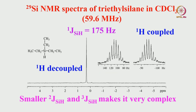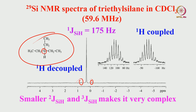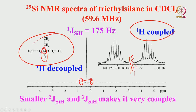Now we look at another simple organic silicon molecule. Again, two types of experiments are done: proton-decoupled and proton-coupled. When proton-decoupled, you see a single peak — only one silicon is present, giving a singlet. You also get two satellites from silicon-carbon one-bond coupling. There is also the proton-coupled spectrum, where one-bond silicon-proton coupling is present and is quite large. This will split the silicon peak into a doublet of the order of 175 Hz.